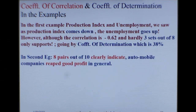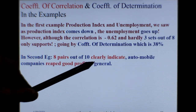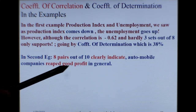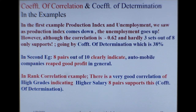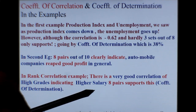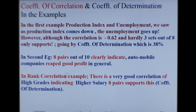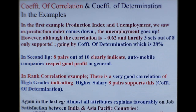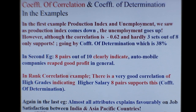In the second example on profit earned by automobile companies, 8 pairs out of 10 clearly indicate the companies reaped good benefit. In the rank correlation example, high grades indicate higher salary, with 8 pairs of data supporting this. For the job satisfaction survey, almost all attributes explain favorably — meaning nearly the same environment exists in India and Asia Pacific countries.